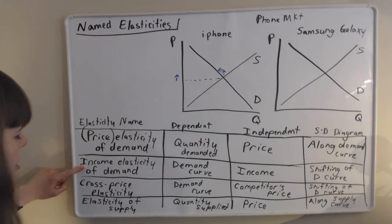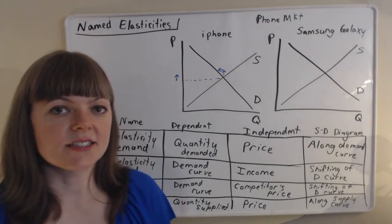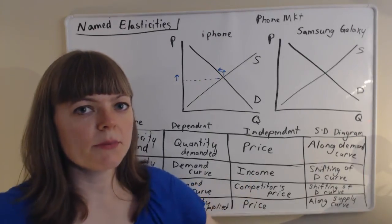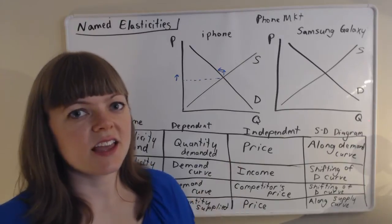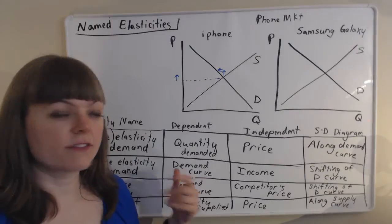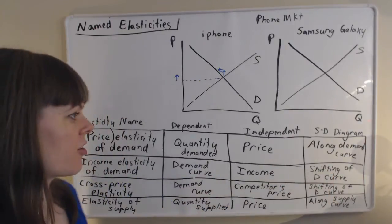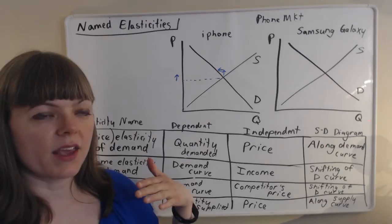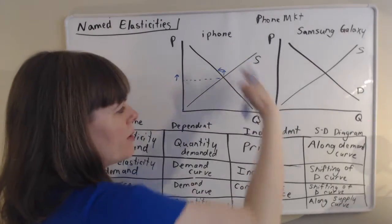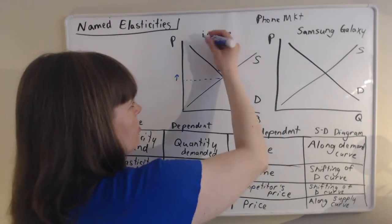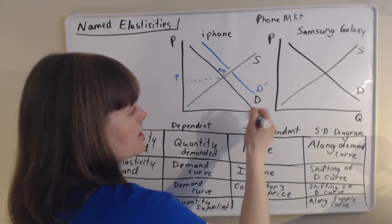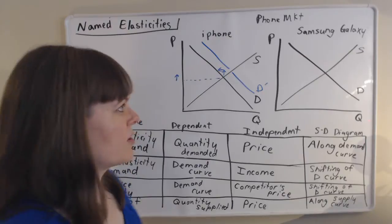Second kind that you hear a lot about is the income elasticity of demand. And here the independent variable is income. So as people's income increases, let's say during an economic expansion, what happens to the demand curve? So this one's actually measuring a shift in the demand curve. When we end a recession and go into an expansion and everybody's income goes up, how many more iPhones does each household demand? And so this is measuring how big is the change in demand in response to an increase in income.